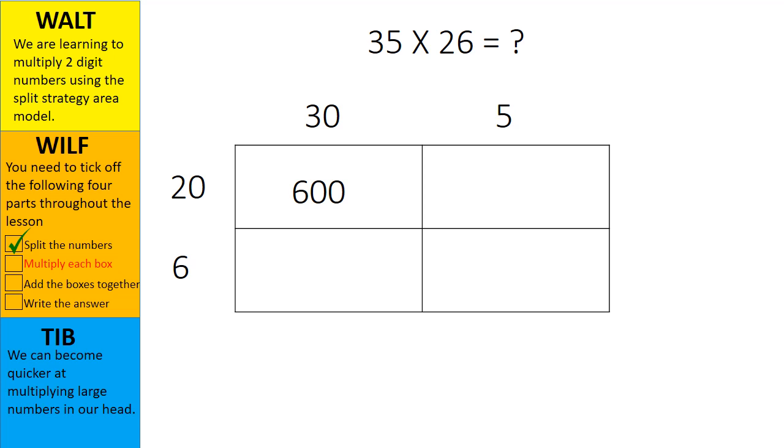I'm going to follow the same format for my next box. This number sentence reads 20 multiplied by 5. I'm going to cover up the zero in this number sentence again to make it easier to multiply. The number sentence now reads 2 multiplied by 5 which equals 10.